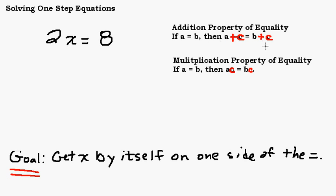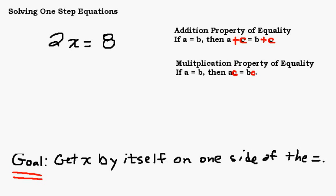Our goal is to get x by itself on one side of the equal sign. On the left-hand side we have 2x; on the right-hand side we have 8. We need to get rid of this 2. In the last problems we were adding positives and negatives to both sides, so some of you might say: let's add negative 2. But we have a problem — this negative 2 and this 2 are not going to cancel because this 2 is times x. They are not like terms. You can't combine a term with an x with a term that doesn't have an x, so adding negative 2 to both sides will not get rid of this 2.